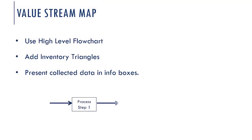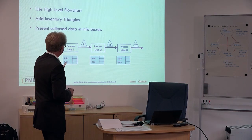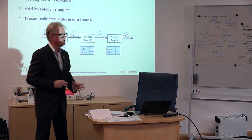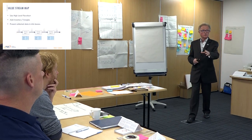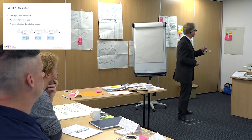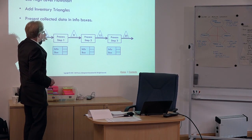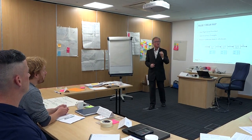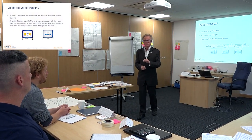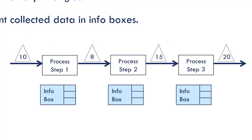For the value stream map, we use a high-level flowchart to give us a picture: process step one, process step two, process step three. You can show how that works for your process. We then add inventory triangles — the inventory triangle is a simple representation of how much stock is held prior to that processing step. So you might have 10 prior to this step, 8 prior to this step, 15 prior to this step.